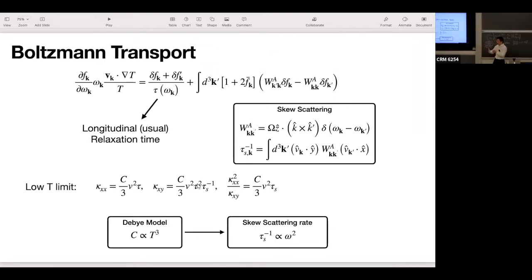With this, we could define a skew scattering rate, tau_s inverse. In the low temperature limit, there's an integral where you could approximate it to a constant, and things simplify to this, where kappa_xx is heat capacity, velocity squared, sound velocity squared, and the relaxation time. Kappa_xy, this is tau squared, and then the skew scattering rate. With this, the ratio becomes a quantity that depends on heat capacity, sound velocity, and the skew scattering time.